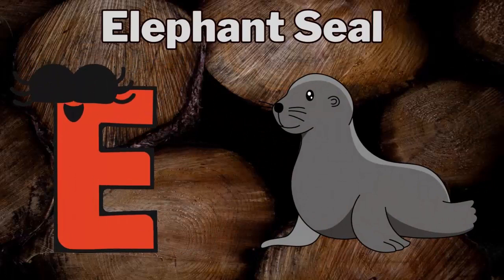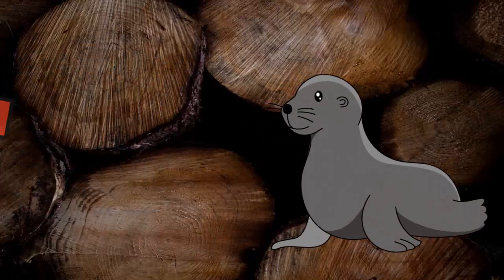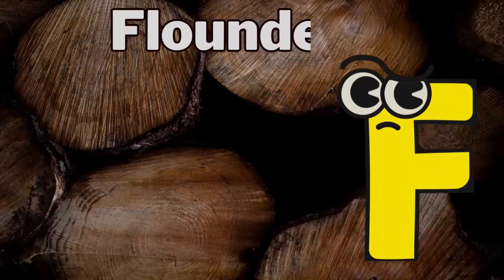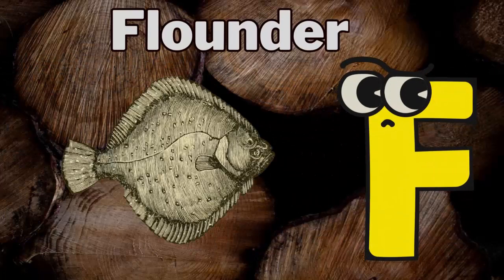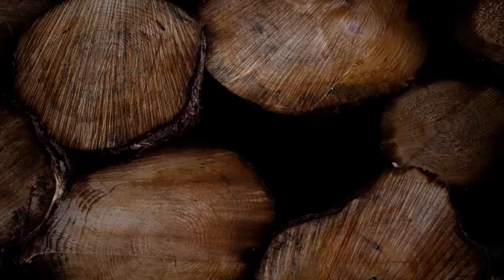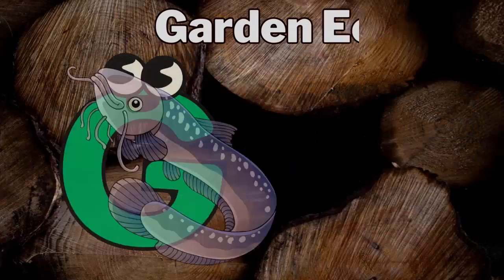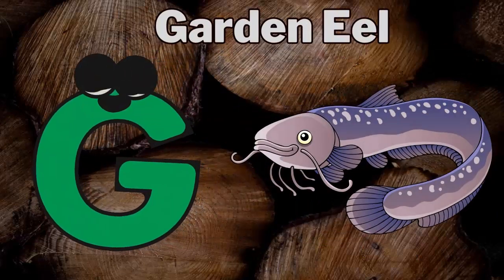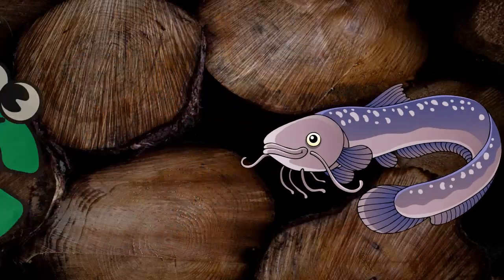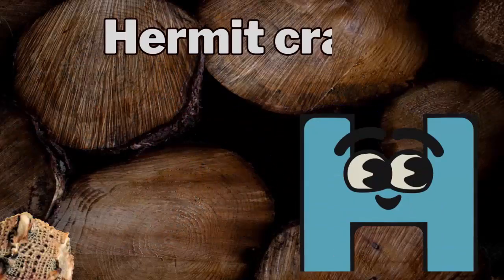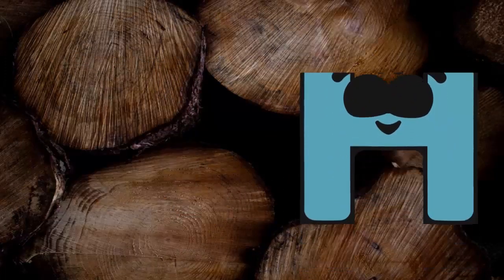E. E for elephant seal. F. F for flounder. G. G for garden eel. H. H for hermit crab.